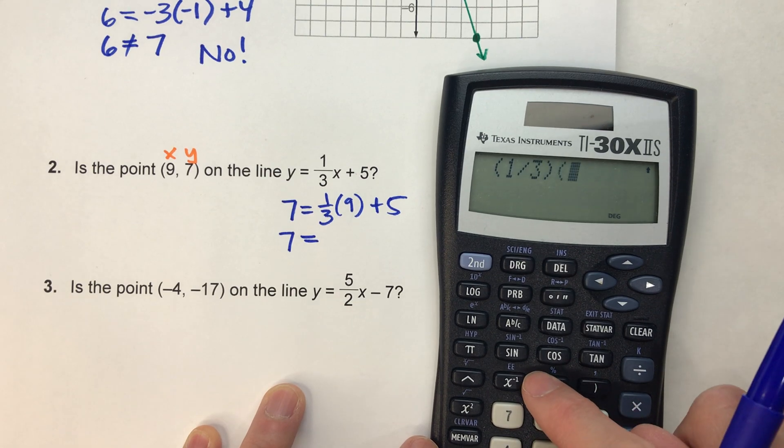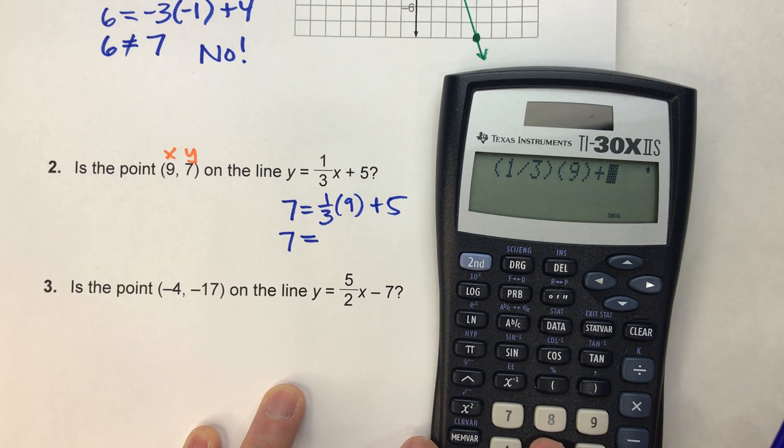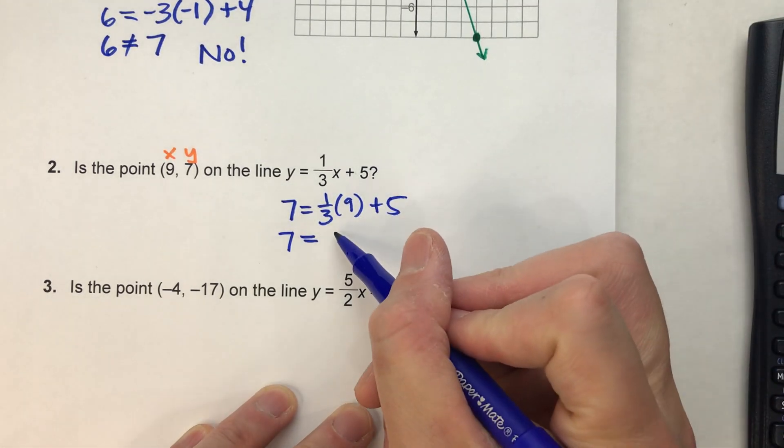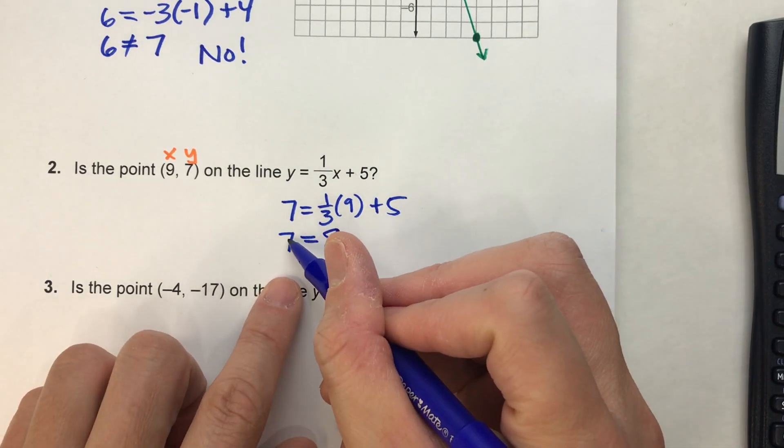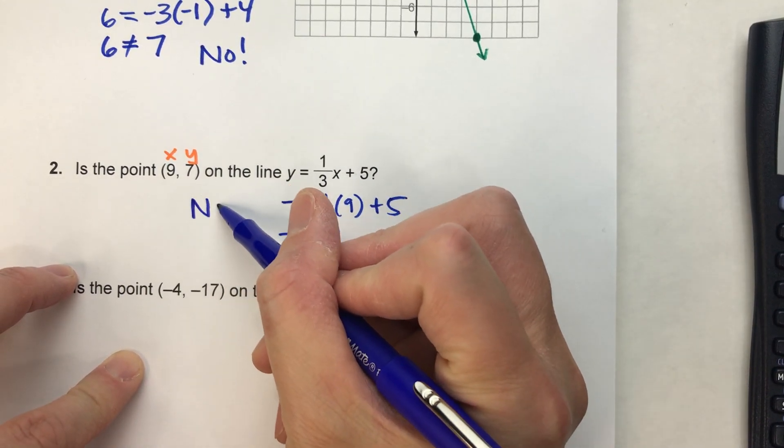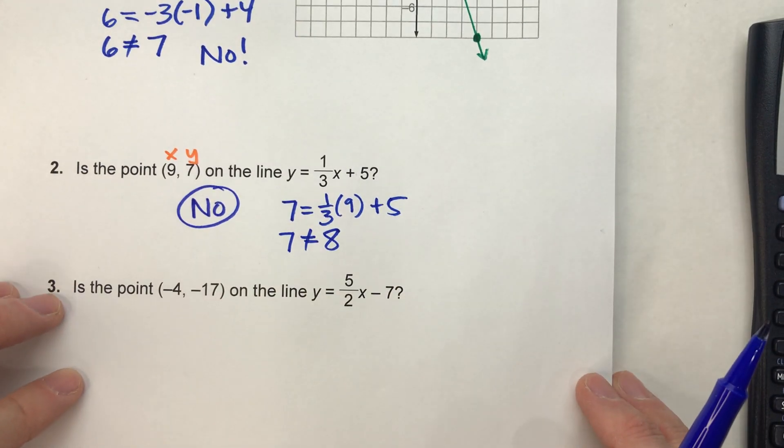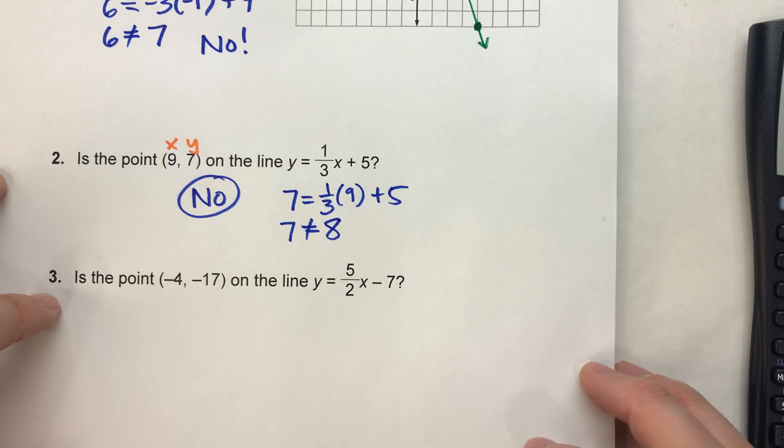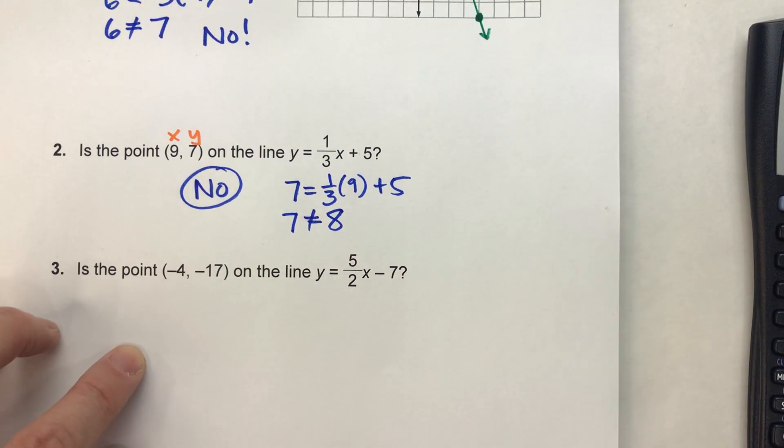(1/3) times 9 plus 5 equals 8. Now, 7 doesn't equal 8. So, what that tells me is, no, this is not on that line. So, in a lot of ways, it's a lot faster to use algebra than to make the whole graph.